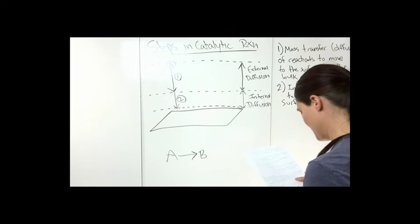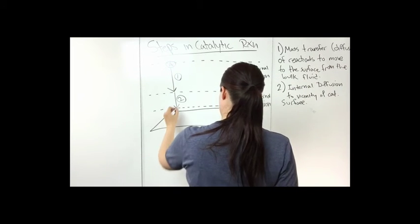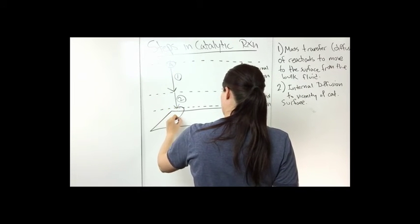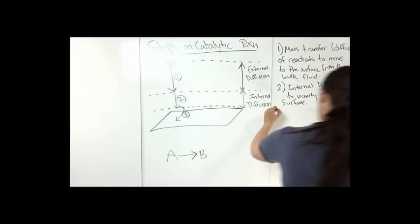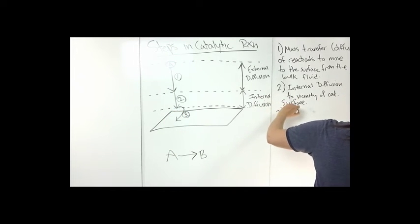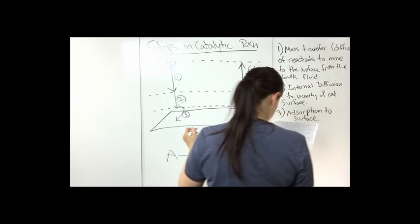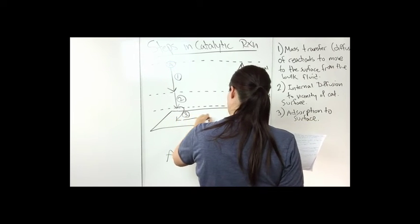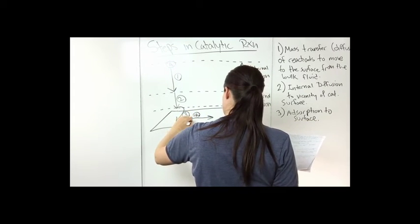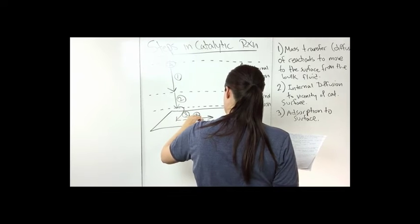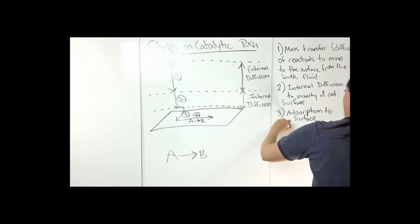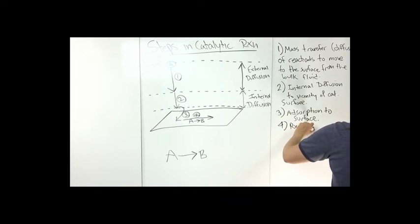So then the next step is the absorption onto the surface. So now it's absorbed to the surface. So I'm going to put three, absorption to surface. And then the reaction on the surface happens. So this is four. And so this is A to B. So four, reaction on surface.